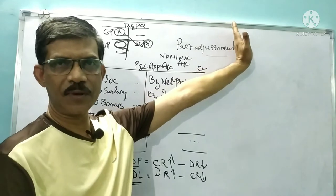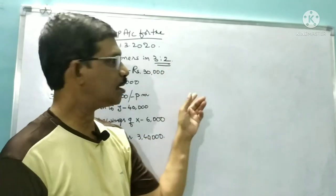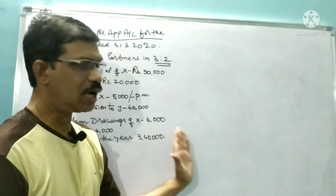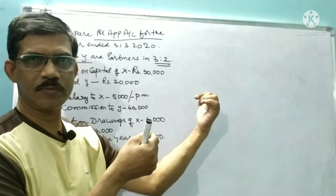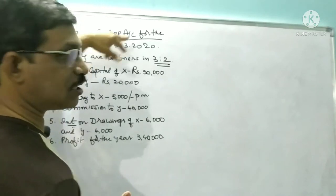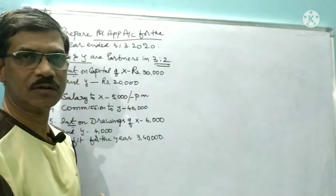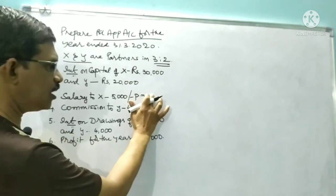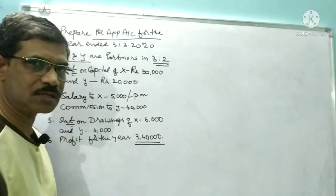We will proceed to our topic — past adjustments. Before that, I will take up one question on P&L appropriation account and explain it, then tell you the connection between past adjustments and P&L appropriation account. Prepare P&L appropriation account for the year ended 31st March 2020. X and Y are partners sharing in the ratio of 3:2. Given: interest on capital, salary, commission, interest on drawings, and profit for the year 3,40,000.